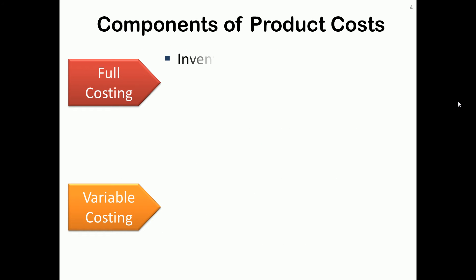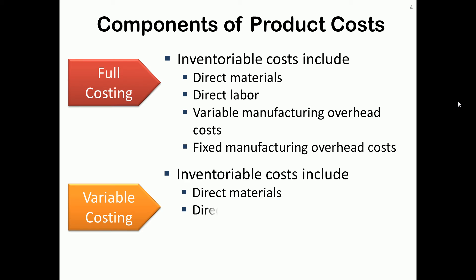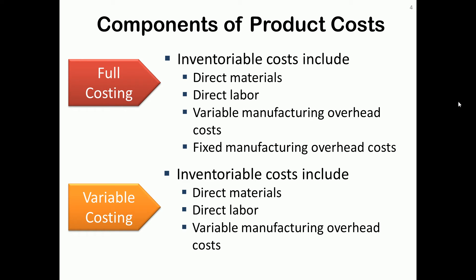Full costing includes direct materials, direct labor, variable manufacturing overhead, and fixed manufacturing overhead as part of inventory cost. Variable costing includes only the three variable costs. Note the difference: variable costing does not include fixed manufacturing overhead. Other than that, the same cost components are included.